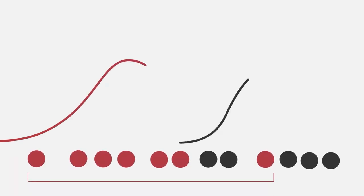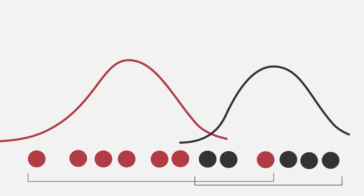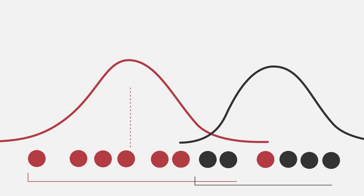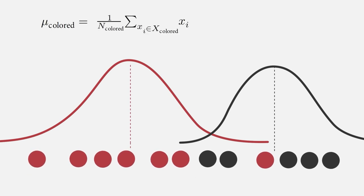Now suppose that the data points were produced by two Gaussian distributions. We could now compute the mean and the standard deviation for the colored and the non-colored points and obtain two Gaussian curves. For each of the two groups, we can estimate the mean by taking the average of our observations.